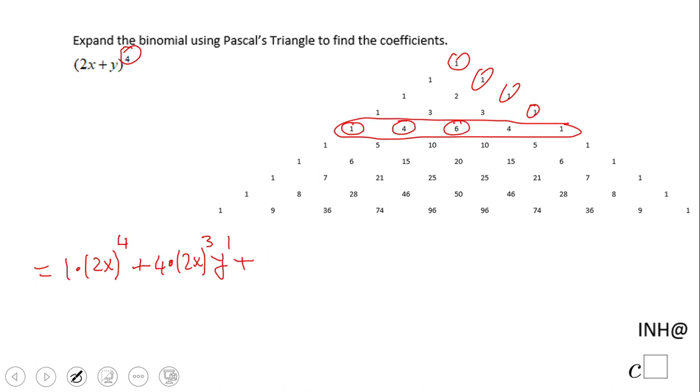Plus then we have the 6 here, 6 times 2x to the second power, y to the second power. Same, so you see the sum of the exponents, 2 plus 2, is 4.